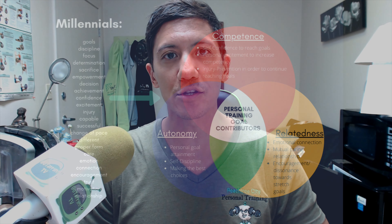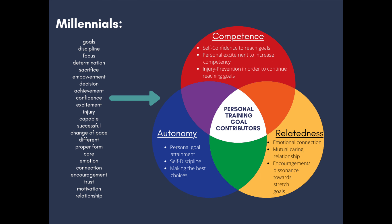The sub-components of self-determination theory include autonomy, competence, and relatedness. After completing all coding, examining, and cross-referencing all ten clients and their answers, I was able to provide a description of the phenomena. On one side of the screen we can see codes — words frequently provided by participants — and to the right, a Venn diagram showing the three components of self-determination theory: autonomy, competence, and relatedness.